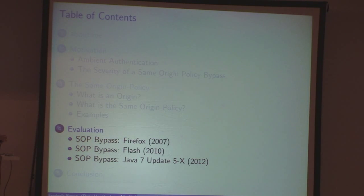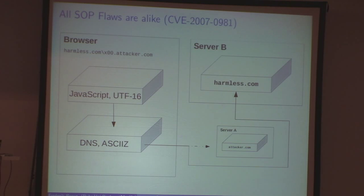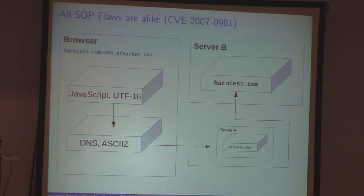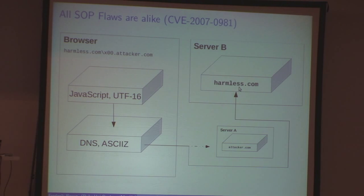Now I'll talk about some same origin policy bypasses. Assuming you're an evil page trying to read information from a benign webpage like Amazon, eBay, or Facebook. In this vulnerability from 2007, you instructed Firefox to change the current domain name to harmless.com followed by a null byte then attacker.com. The JavaScript world was fine with it, operating on UTF-16 strings. But the HTTP requests and DNS code in Firefox is based on C zero-terminated strings, which read only harmless.com. This let you access stuff from harmless.com and bypass the same origin policy.